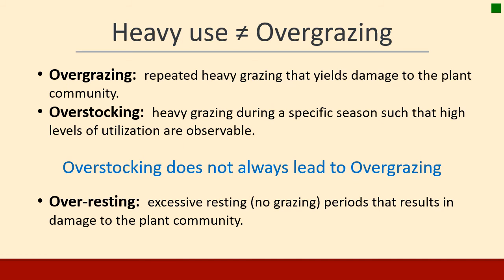Two words we should distinguish: overgrazing is not overstocking. When you're driving down the road and you see a pasture with not much forage, it may not be overgrazed — it might have just been heavily grazed for a management procedure like weed control. Overgrazing occurs when repeated heavy grazing creates damage in the plant community. Overstocking is just heavy stocking during a specific time of year that looks observable, but we don't know it's overgrazing until it causes damage. Overstocking does not always lead to overgrazing; in fact, sometimes overstocking is an important management decision.